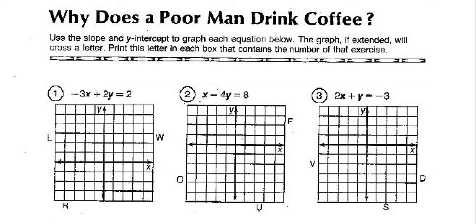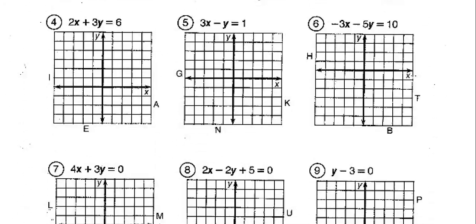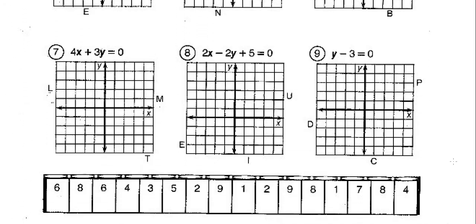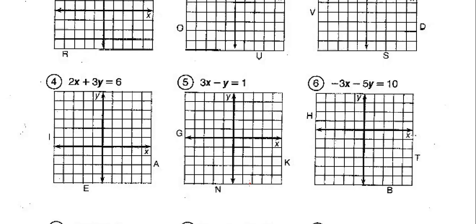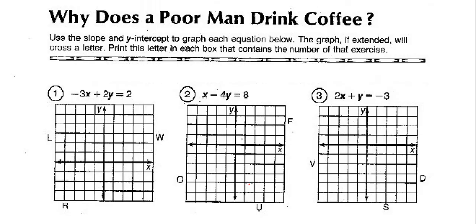Today we're going to be doing the worksheet called 'Why Does a Poor Man Drink Coffee?' This is a math worksheet about slope and y-intercept, but also it's kind of fun with a little riddle here. Whatever answer we get, we're going to plug in down here — whatever letter we get where the slope intercepts — and we will answer the question of why does a poor man drink coffee. So let's get right to it.